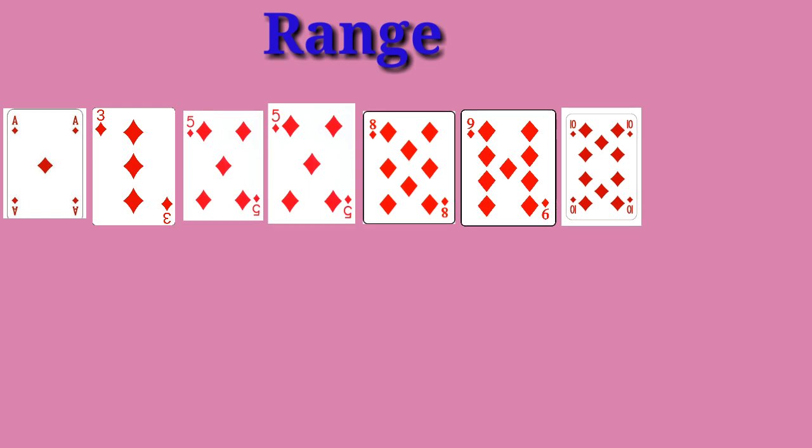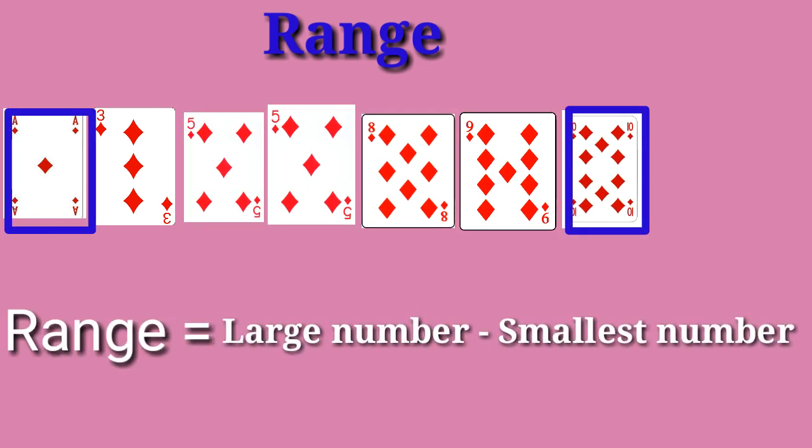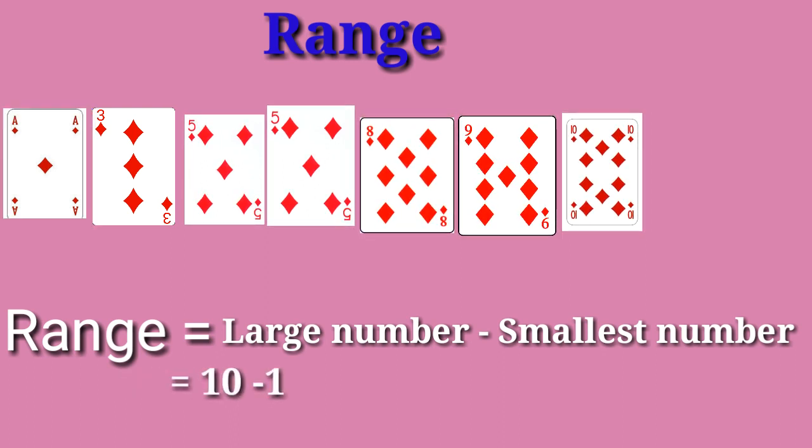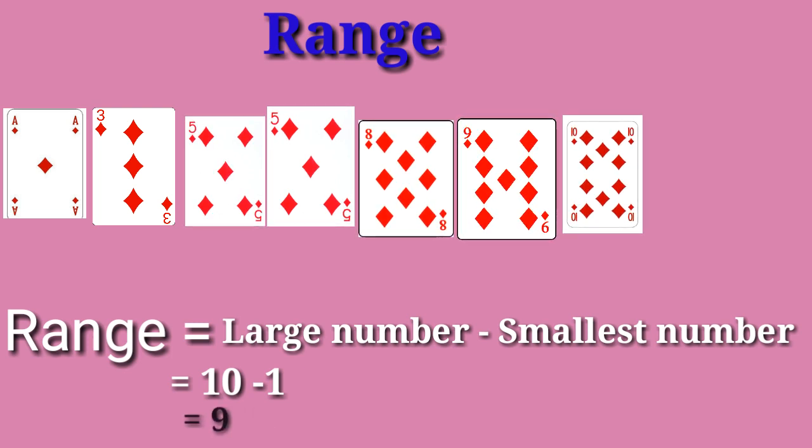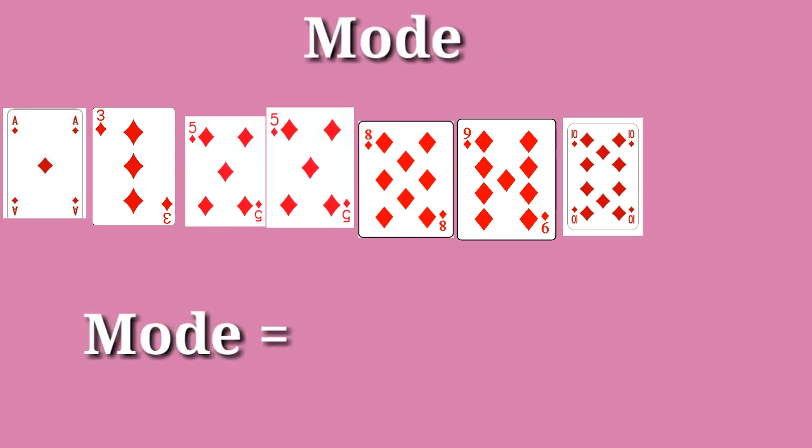Now we will find range. Range equals large number minus smallest number. Here, the large number is 10 and smallest is 1, so 10 minus 1 equals 9. Now the time for mode, the most occurring value.